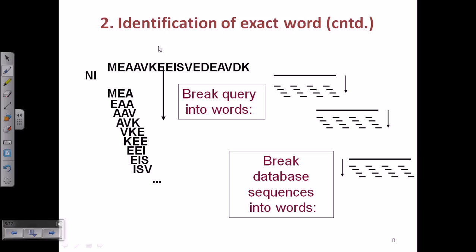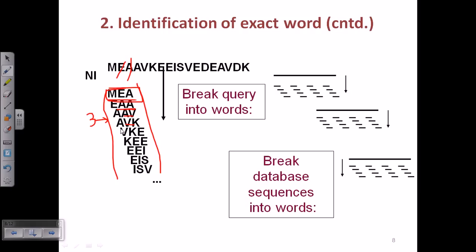For a protein sequence, the query words are generated with a word limit of 3. The words are generated by sliding one amino acid at a time: for example MEA is the first word, then EAA is the second, then AAV is the third, then AVK is the fourth, then VKE is the fifth, and so on — each time skipping one amino acid to form the next word.